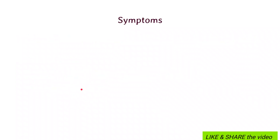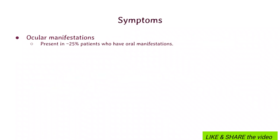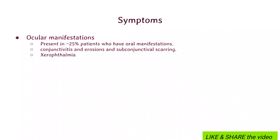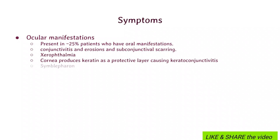Ocular manifestation is another important feature associated with this disease. Almost 25 percent of patients have ocular symptoms. There is a range of ocular involvement including conjunctivitis and erosions, which may lead to subconjunctival scarring, xerophthalmia, keratoconjunctivitis, or symblepharon. It is very important to treat and refer to ophthalmology, because if untreated, it may lead to complete blindness.